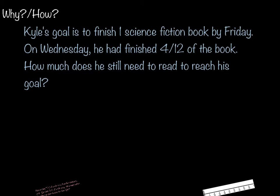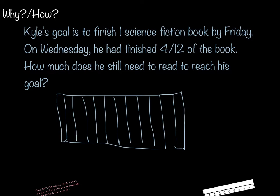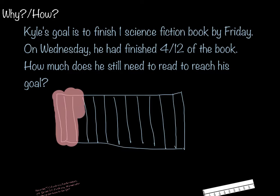Let's take a look at our next example. Pause the video so you can read that to yourself. One way to go about solving this particular problem would be to draw a picture, and we have to think about what is the whole. The whole is going to be the whole book. So instead of 4 twelfths, the whole would be 12 twelfths, but we've read 4 twelfths. So we're going to shade in 1, 2, 3, 4 twelfths, and then we're trying to figure out how much does he still need to read to reach his goal. If we count what is left,